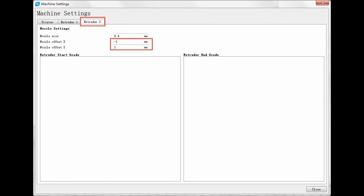Open machine settings and find extruder 2. Set minus 1 for nozzle offset X and 1 for nozzle offset Y and set 0 for both in extruder 1.